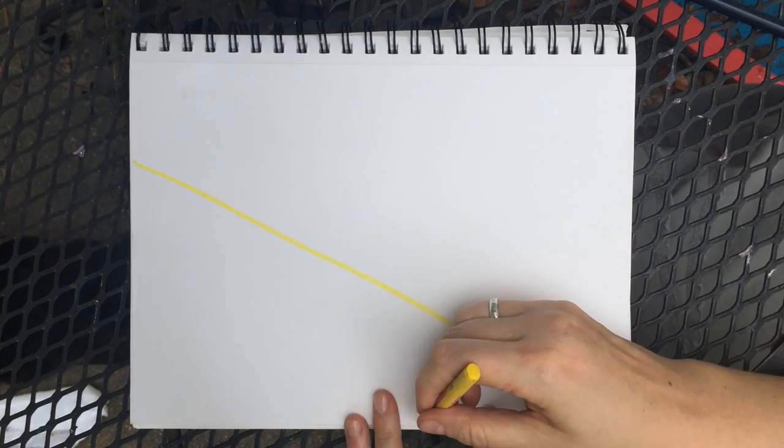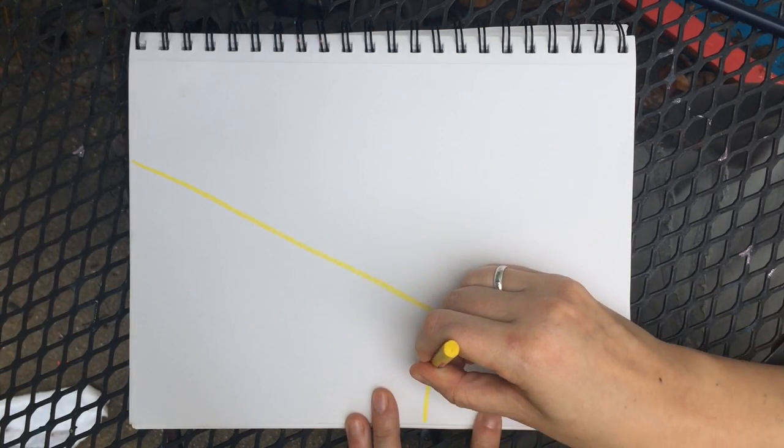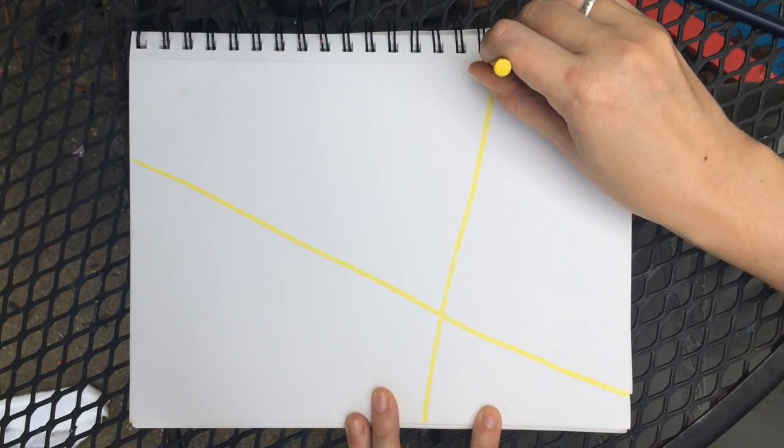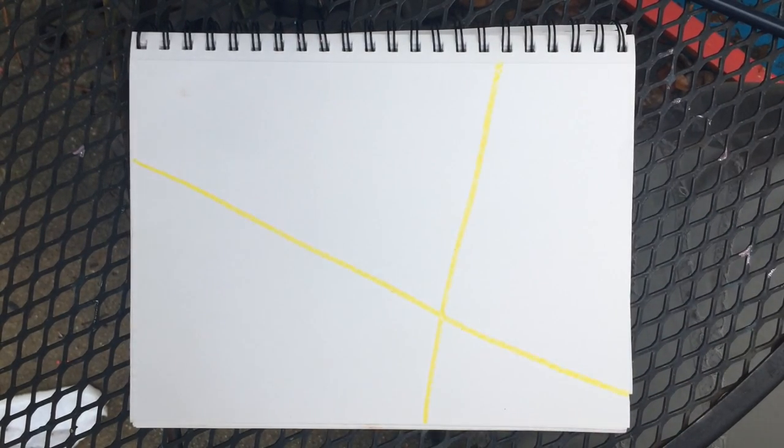Now yours can go another way, that's okay. Then we're going to do the same thing, another line all the way across your page. Okay, two lines. Easy peasy.